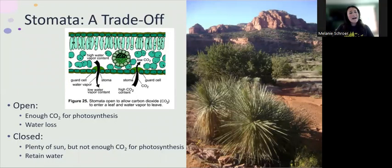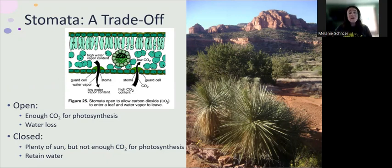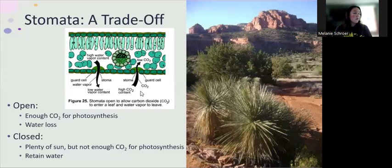What happens if there isn't enough water to pull up from the roots? Maybe in an environment like Sedona, Arizona — the sun is really hot, the air is really dry. That means the environment around the leaf is going to be much drier than inside the leaf, creating a really steep gradient and therefore a lot of water lost through the stomata as long as they are open.